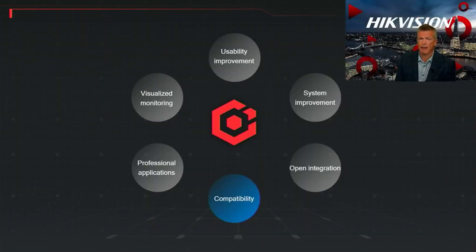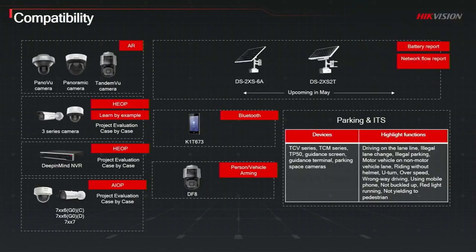This module is about compatibility, which has been greatly improved in version 2.4 with even more Hikvision front-end devices. This slide shows the compatibility improvements with some Hikvision products — for example, the face recognition reader, the K1T673, which now supports Bluetooth, as highlighted. The augmented reality for the Panaview cameras is also supported, as well as speed detection for traffic cameras. So if you want to use HikeCentral not just for monitoring sites but also for speed detection, that's now supported.